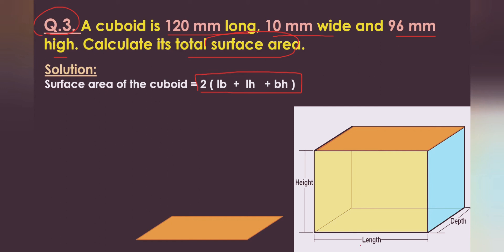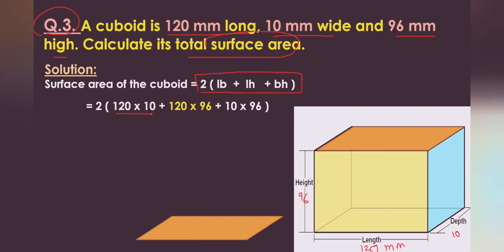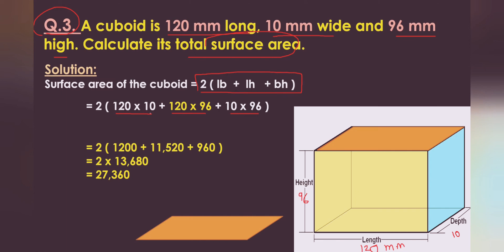Length is 120 mm, width is 10 mm, and height is 96 mm. So: length times breadth is 120 × 10 = 1,200; length times height is 120 × 96 = 11,520; breadth times height is 10 × 96 = 960.